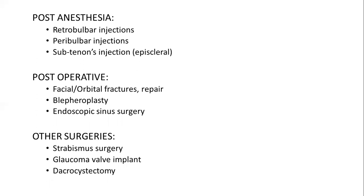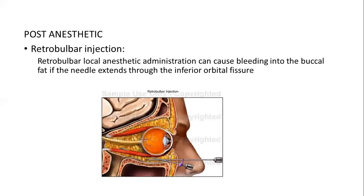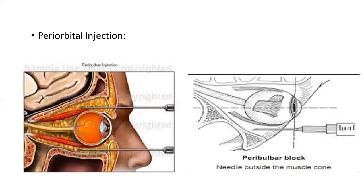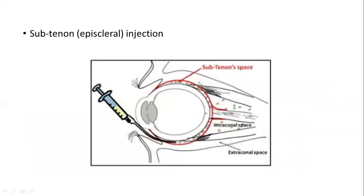Post-operatively, it can occur after orbital surgery, endoscopic sinus surgeries, or other surgeries like strabismus surgery, glaucoma valve implant, or nasolacrimal duct surgeries. Spontaneously, it can be due to lymphangioma, arteriovenous malformations, coagulopathies, or septicemia. Retrobulbar injections, peribulbar injections, and sub-Tenon's injections can all lead to blood accumulation in the retrobulbar space.